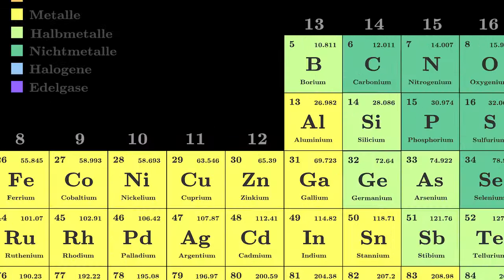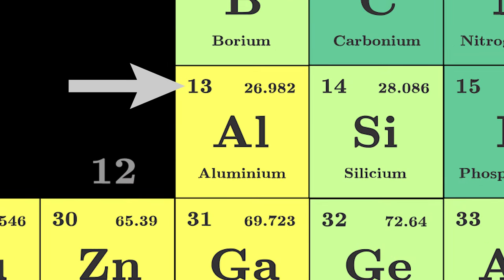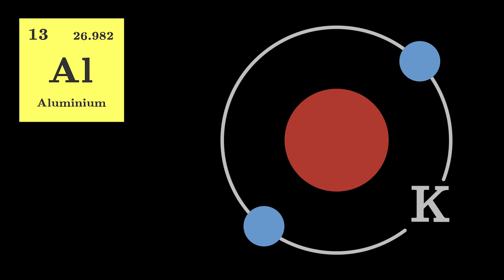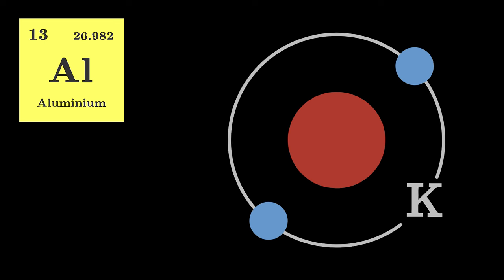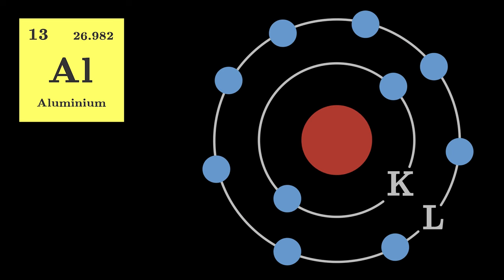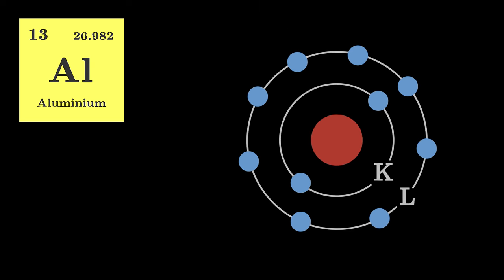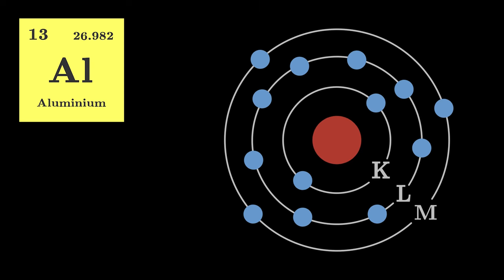The aluminum atom has 13 electrons. Two electrons are added to the K-shell. Eight electrons are added to the L-shell, then the L-shell is full. The remaining three electrons are added to the M-shell.